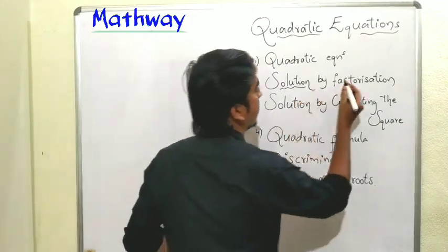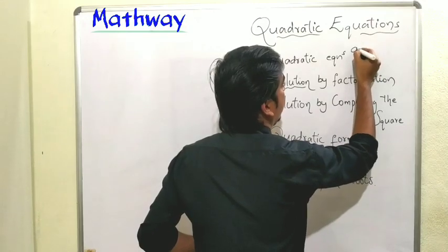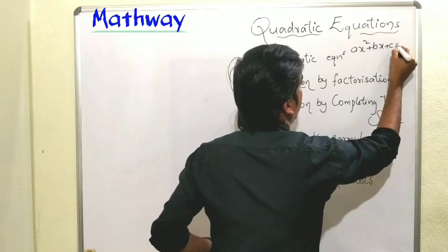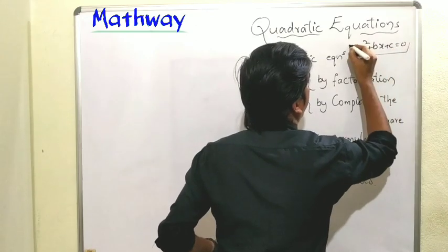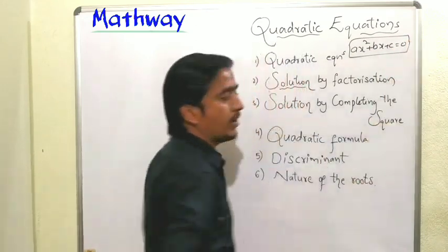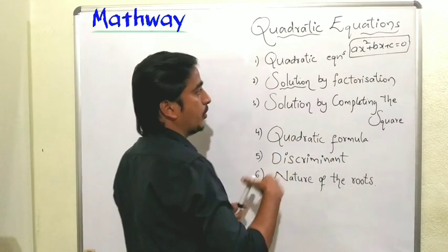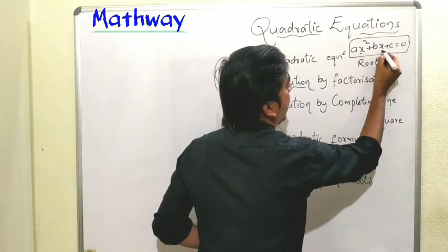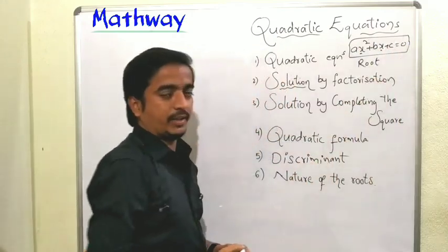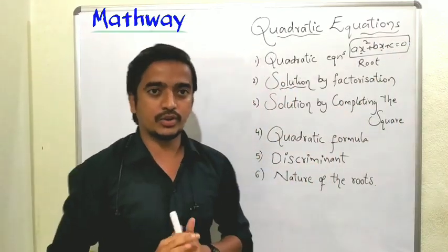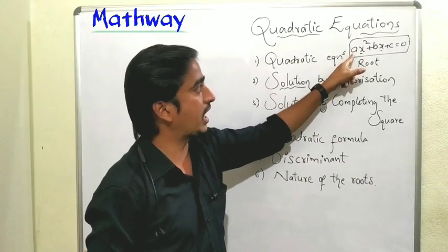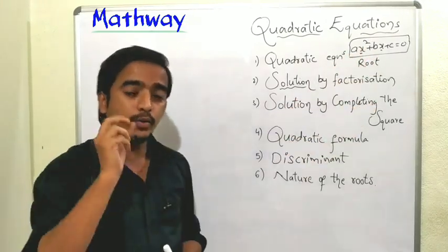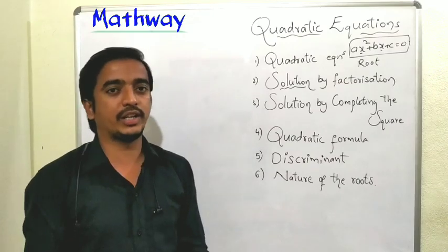For example, the quadratic equation ax² + bx + c = 0 is the general form of the quadratic equation. The roots are the x values at which this equation is satisfied. Since the quadratic equation has degree two, it can have two roots.